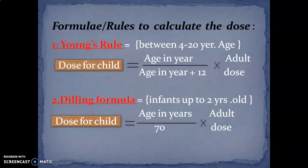So these are the 10 factors which affect the dose of a drug. Now, how will you calculate the dose of a drug? There are various formulas given in your books. The first one is Young's formula, for the calculation of dose of a child when the age of the child is between 4 to 20 years.